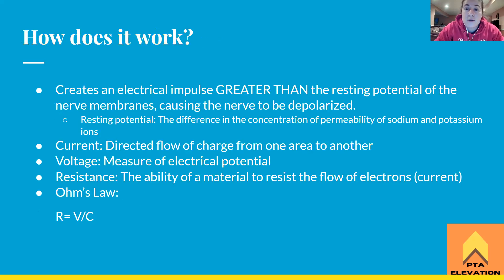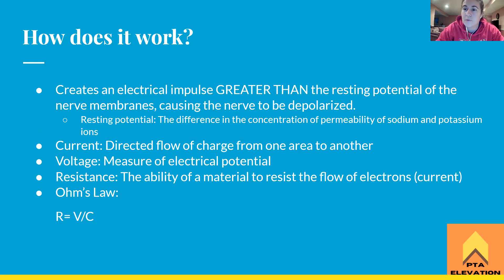How does electrical stimulation work? Thinking back to anatomy, physiology, and physics — when we introduce an electrical current to the body, we are giving a simulation of an electrical impulse that is greater than the resting potential of the nerve membranes, causing the nerve to depolarize. The resting potential of most nerve membranes is about negative 70 millivolts, and we're giving an impulse greater than that, which causes an action potential.